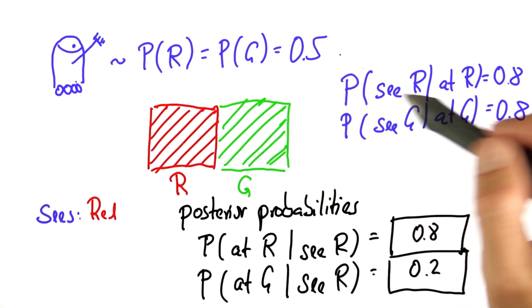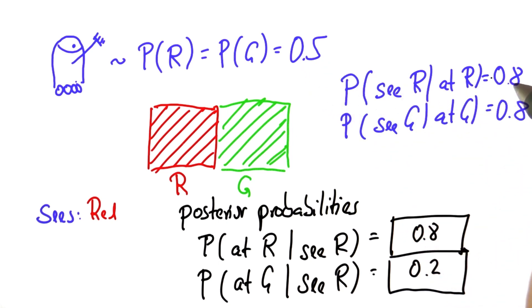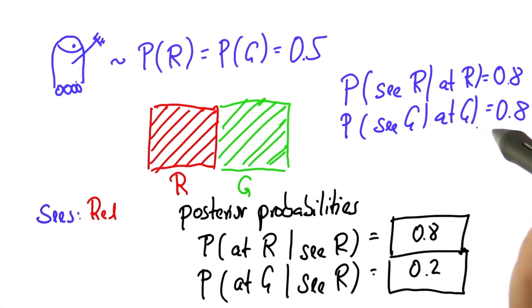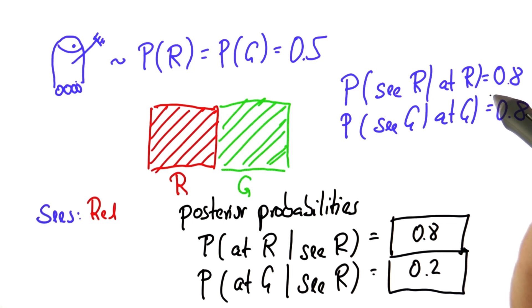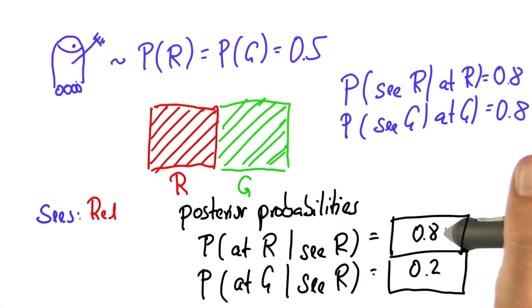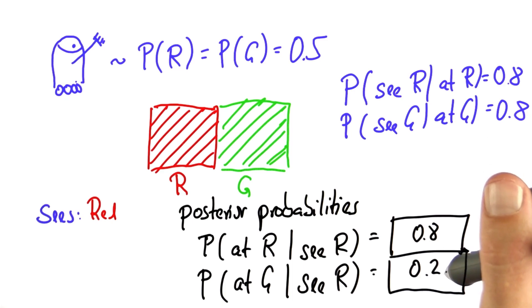The joint for red after seeing red is 0.4, the same for green is 0.1. 0.4 plus 0.1 adds to 0.5. If you now normalize 0.4 divided by 0.5, we get 0.8, and if you normalize 0.1 by 0.5, we get 0.2.